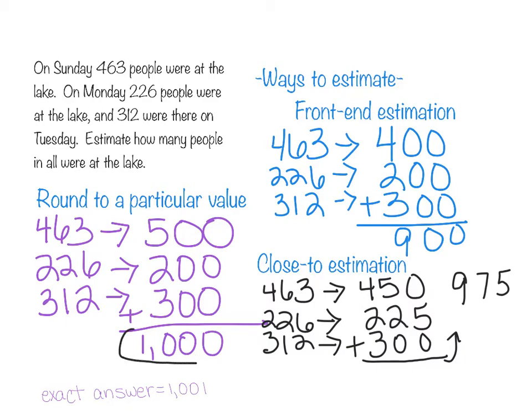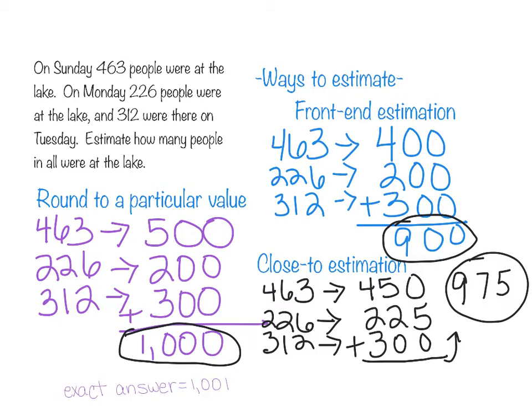They're in the same range. We've got 1,000 for this method, 900 for this one, and 975 for this one. The exact answer is 1,001. As you can see, each of those estimation methods were somewhat close to that actual answer, and that's what we want. When looking at this problem and trying to determine which estimation method is the best one, we would probably pick rounding to a particular value because that was the one that was closest to our actual answer.